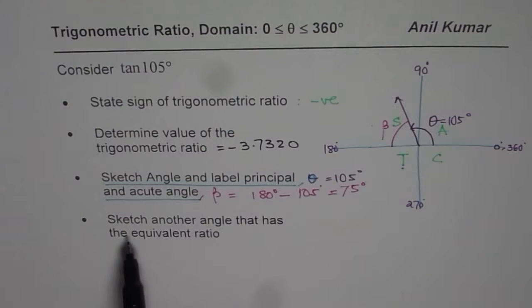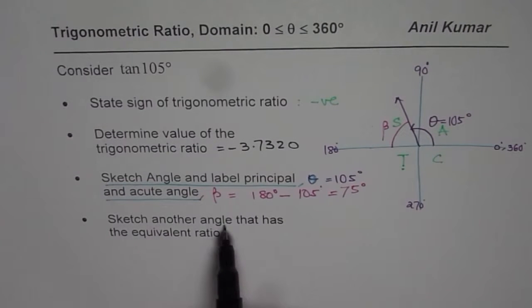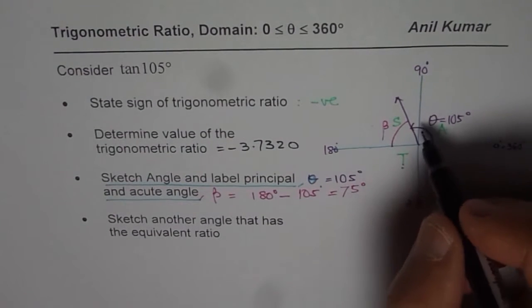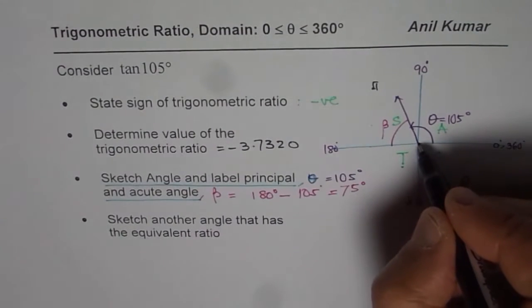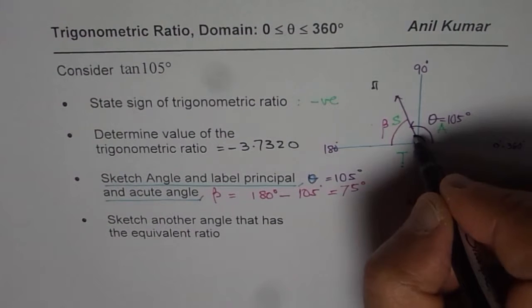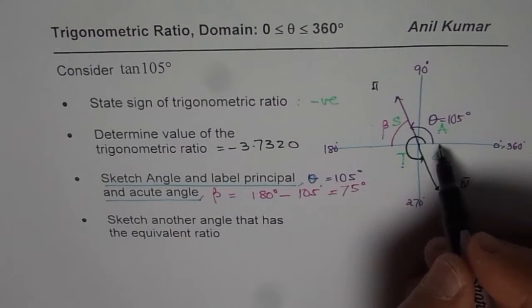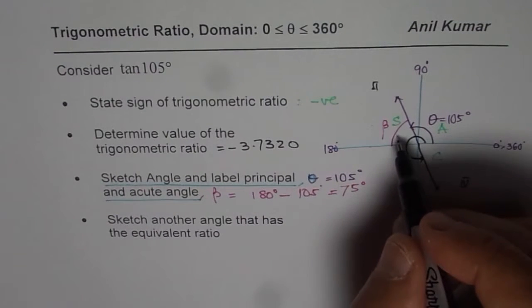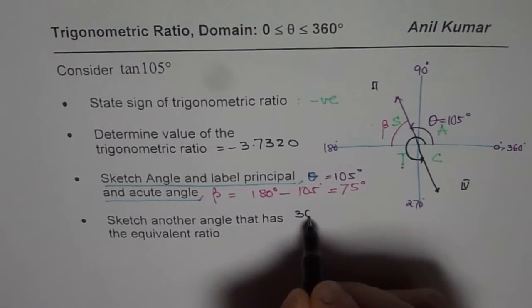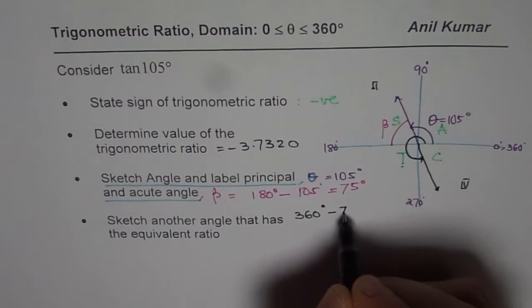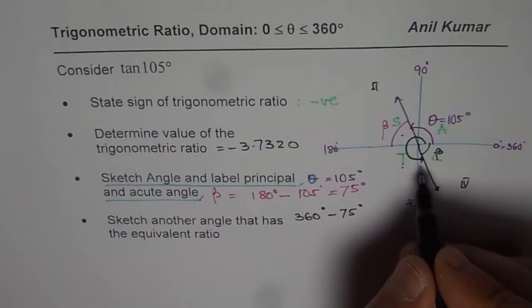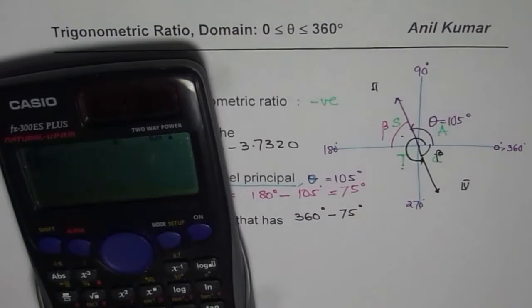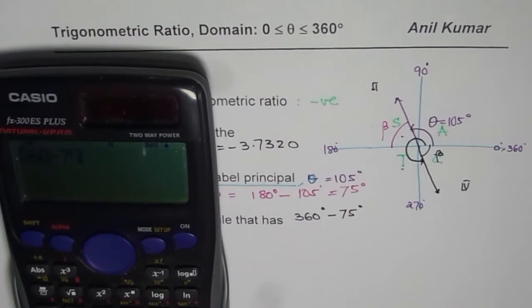Now we have already done part 3 and part 4 is, sketch another angle that has the equivalent ratio. Now that is kind of important. How to find another angle that has the equivalent ratio? Now strictly speaking, negative value of tan will only be in quadrant 4 or in quadrant 2. So the other angle is in quadrant 4. And that should be, how much? 360 minus the acute angle beta. So the other angle is 360 degrees minus beta, which is 75 degrees. Opposite angles are equal. Do you see that? So 360 minus that will give us another position. So we can use the calculator again and do 360 minus 75 and that gives us 285.